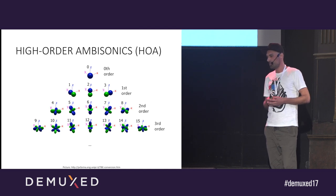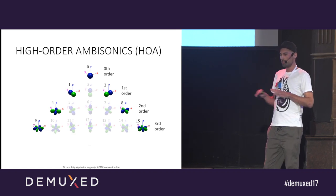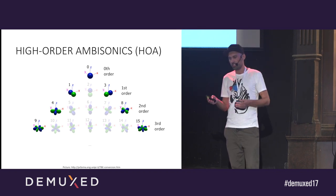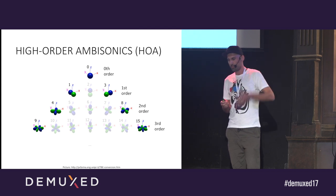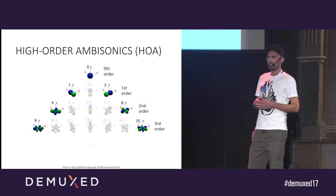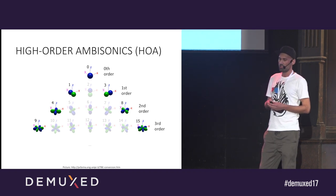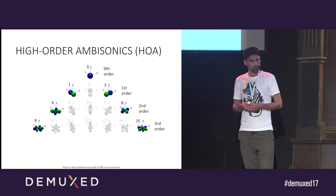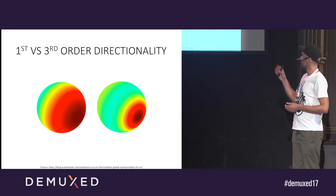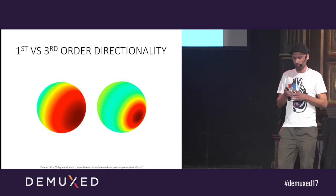The nice thing about ambisonics is that it's quite flexible. For example, we can take only channels that cover the horizontal plane and get horizontal surround sound. Or we can combine — for example, first-order height information combined with third-order horizontal information. That's pretty flexible for many use cases and gives opportunities to save data. This is an example of how directionality increases from first-order versus third-order, and you can clearly see that third-order is much more directional.